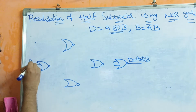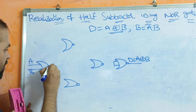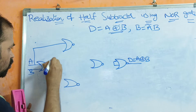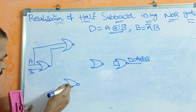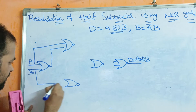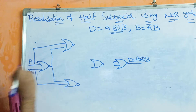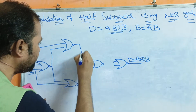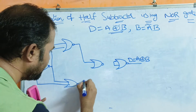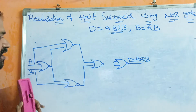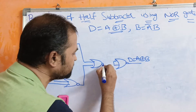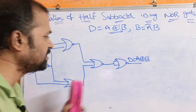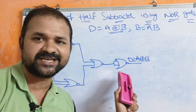The first NOR gate receives inputs A and B. The second NOR gate receives A as well as the output of the first NOR gate. The third NOR gate receives B as well as the output of the first NOR gate. The fourth NOR gate receives the outputs of the second and third NOR gates. To produce A XOR B, the fourth NOR gate's output is passed as input to the fifth NOR gate, which is a single-input NOR gate.